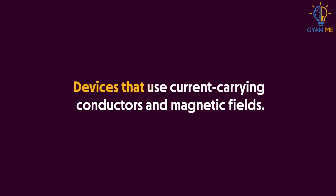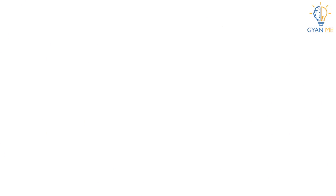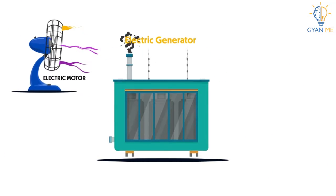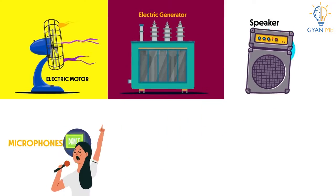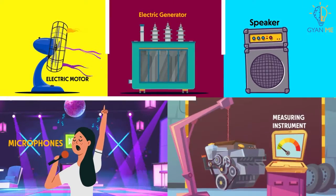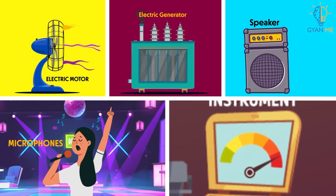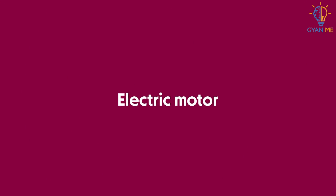For example, devices that use current carrying conductors and magnetic fields include electric motor, electric generator, loudspeakers, microphones, and measuring instruments. In this section, let us study about electric motor.